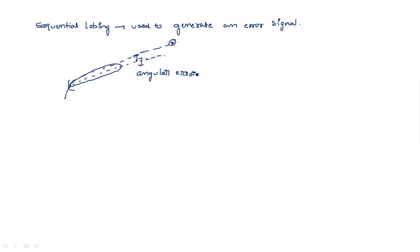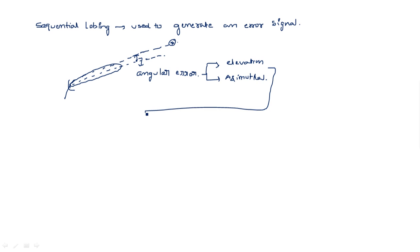This angular error can be either an elevation error or an azimuthal error — that means the error may be in the vertical direction or the horizontal direction. Depending upon the error signal, we feed the output to the servo mechanism. The servo motor is connected to the plate of the antenna, so depending upon whether the error signal direction is positive or negative, the plate is rotated by the servo motor by the corresponding angle.